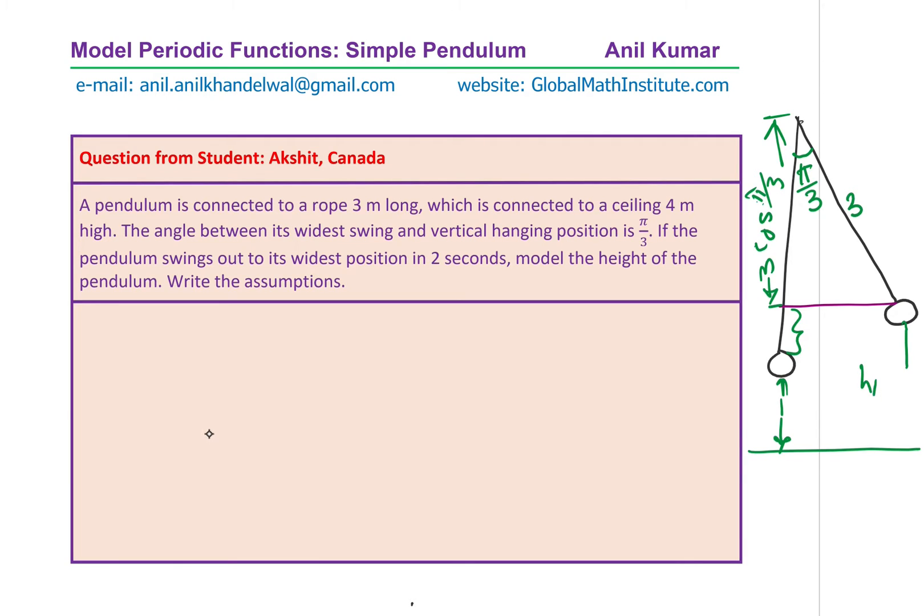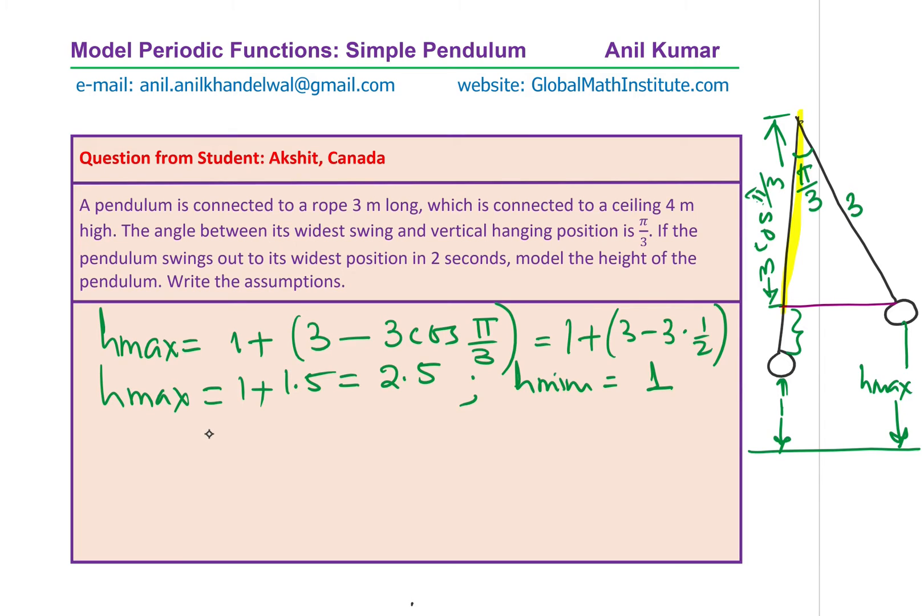We get this maximum height, H max, as 1 plus 3 minus this length, which is 3 cos theta. Angle being pi by 3. Now, cos pi by 3, as you know, is half. We can write this as 1 plus 3 minus 3 times half. And that gives you the maximum as 1 plus 3 minus half of 3 is 1.5. That is 2.5. We know the maximum height, we already know the minimum height, which is 1. We can now find other parameters.